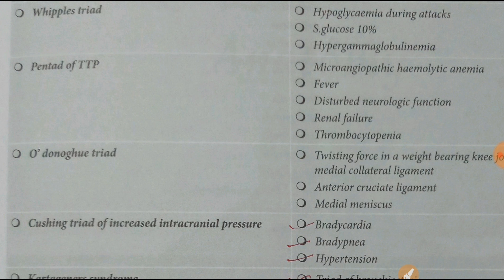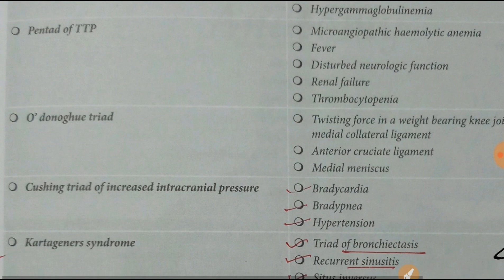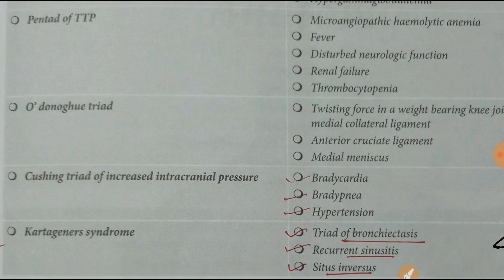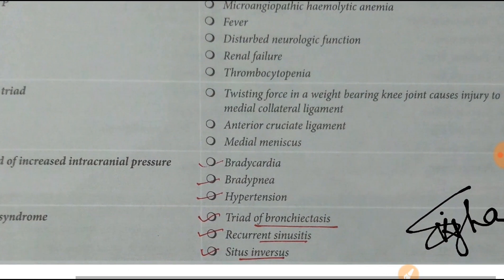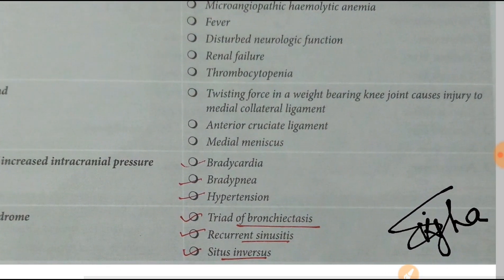Pentad of TTP: microangiopathic hemolytic anemia, fever, disturbed neurological function, renal failure, and thrombocytopenia.